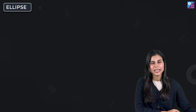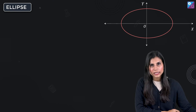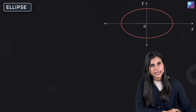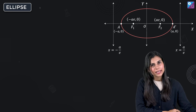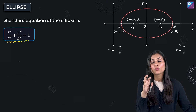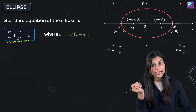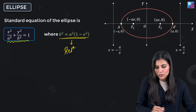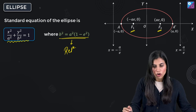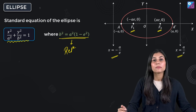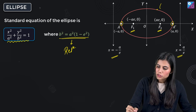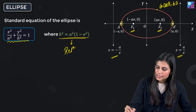Now let's move on to the ellipse. For a standard horizontal ellipse with center at origin — stretched along the x-axis with major axis along x and minor axis along y — the equation is x²/a² + y²/b² = 1. Here a² and b² are related by eccentricity e through the very important relation: b² = a²(1 - e²). The coordinates of the foci are (±ae, 0), the equations of directrices are x = ±a/e, and the coordinates of vertices are (±a, 0).